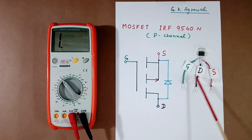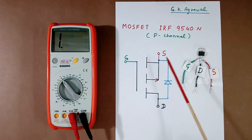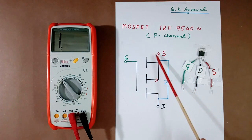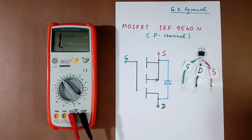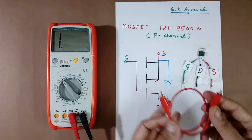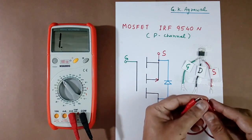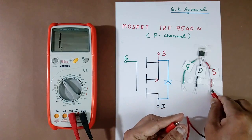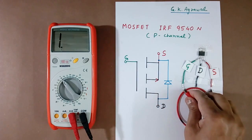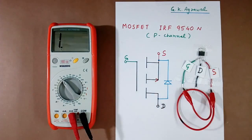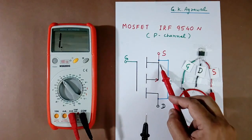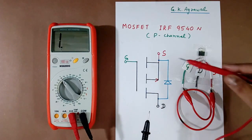Now first we will check this MOSFET in OFF condition. To make it OFF, what we do, we charge first source and gate terminals. I have one wire here. Using this, I will charge source and gate terminal. So this is source and this is gate terminal.